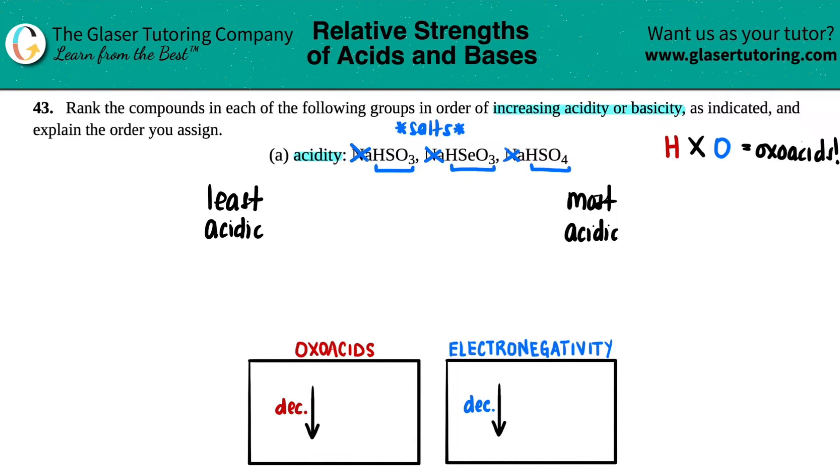What element are you going to be looking for on the periodic table? Well, since they all have hydrogen and oxygen, the only thing that differs is the element in the middle. So you'll be looking at where the sulfur is, where the selenium is, and where the sulfur is again. It looks like we just have two elements.